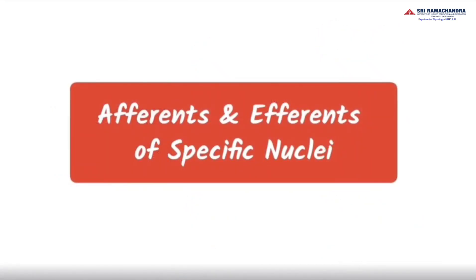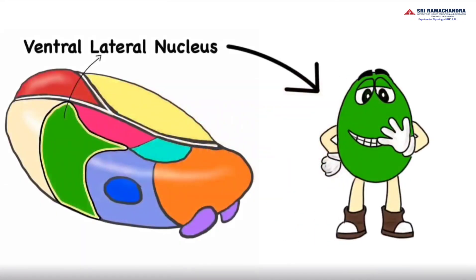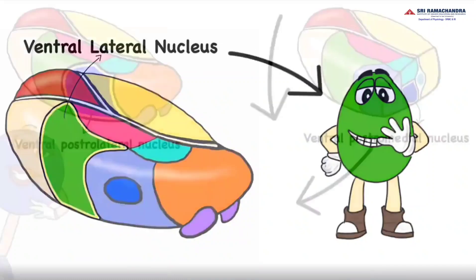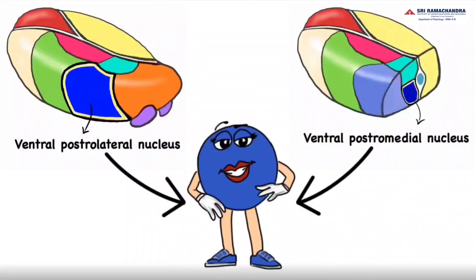Afferents and efferents of specific nuclei: the lateral ventral nuclei receive afferents from the dentatothalamic and pallidothalamic tract, and give efferents to the thalamocortical tract — motor areas 4 and 6. The posterior ventral nuclei receive afferents from spinothalamic fibers, trigeminothalamic fibers, and the medial lemniscus, and give efferents to sensory cortex areas 3, 1, and 2.